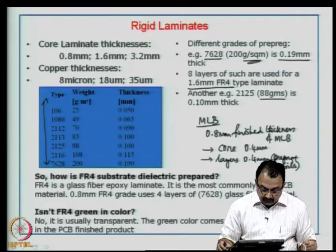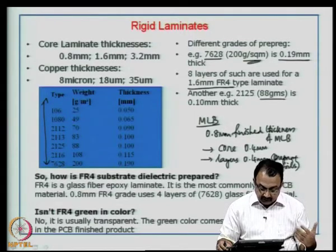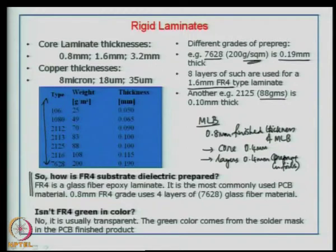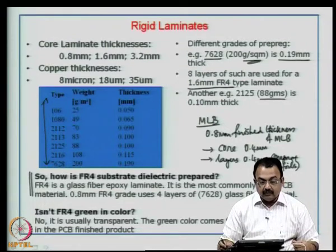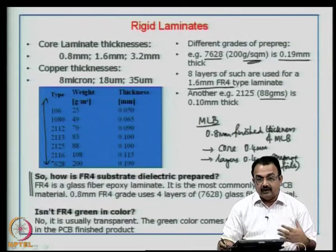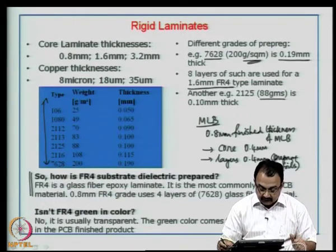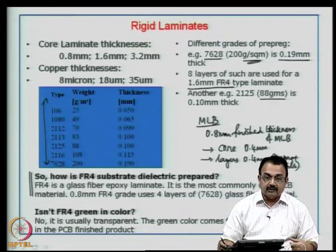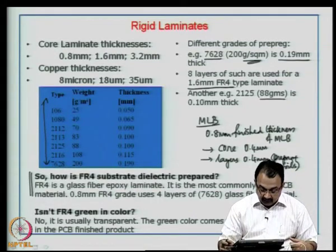How is the FR4 substrate dielectric prepared? FR4 is a glass fiber epoxy laminate — the most commonly used PCB material. A 0.8 mm FR4 grade uses 4 layers of glass fiber material. Is FR4 green in color? No — the basic FR4 material is not green. The green color seen in most samples comes from the solder mask color, which is green. Solder mask is one of the final processes on the finished PCB. The FR4 material itself is usually transparent in color.